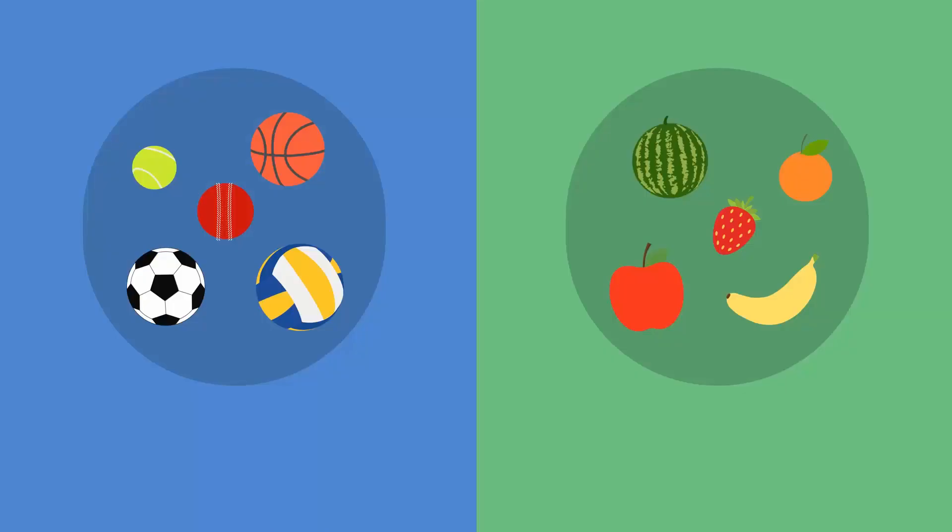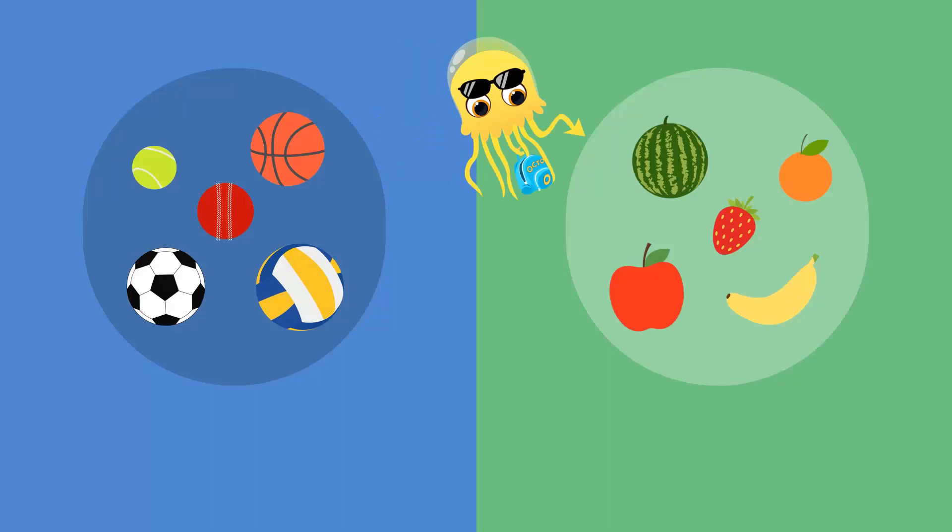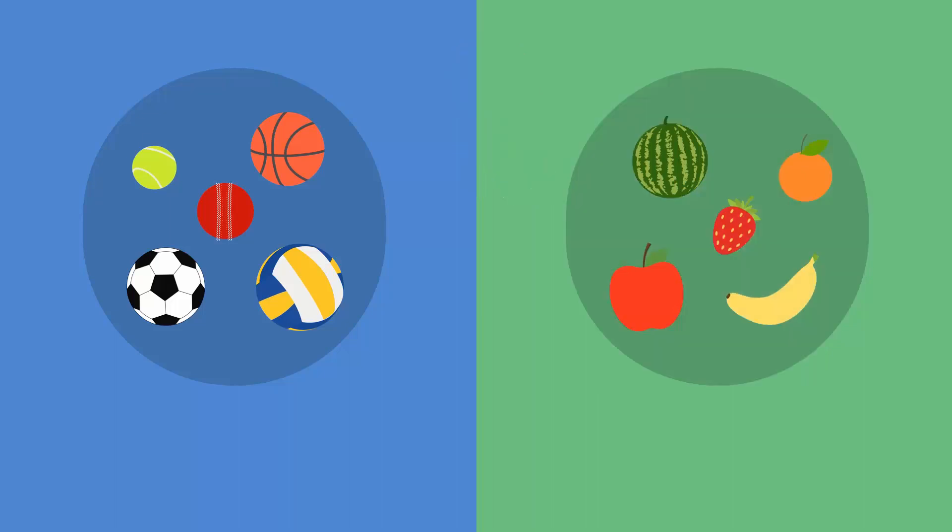Consider these two groups of items. On the left we have a group of balls containing the tennis ball, basketball, cricket ball, football, and volleyball. On the right we have a group of fruits which are the watermelon, orange, apple, strawberry, and banana. Observe that these objects have been placed nicely into their respective groups. Mathematically, these groups are called sets.